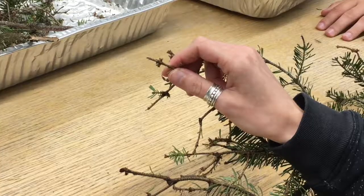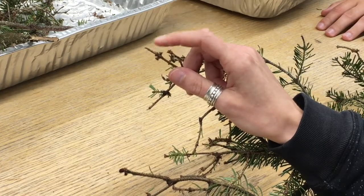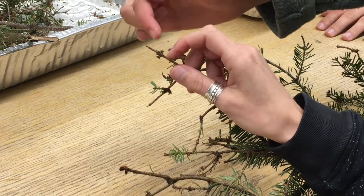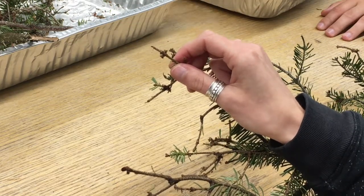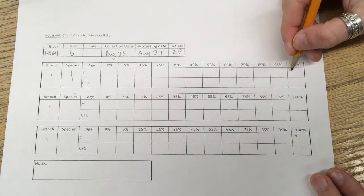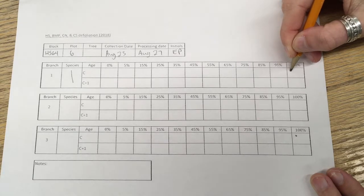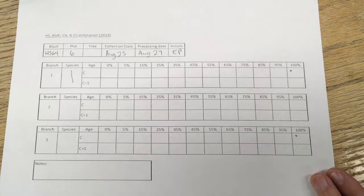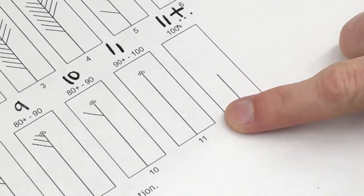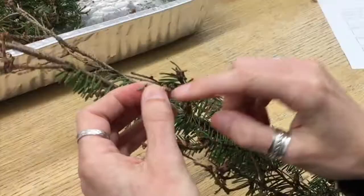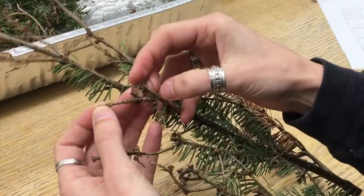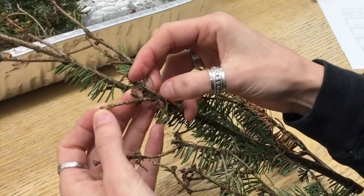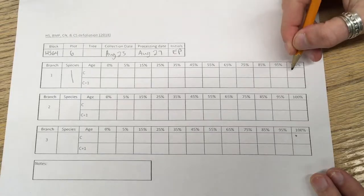100% defoliation can be shown here with no auxiliary buds at the end of the shoot. The dot can be placed in the 100% defoliation column. 100% defoliation can also be shown with auxiliary buds at the end, but no foliage.